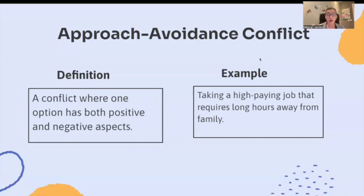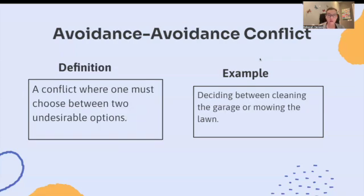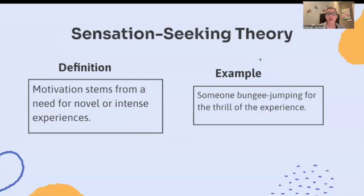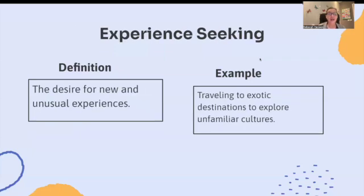Avoidance-avoidance conflict: a conflict where one must choose between two undesirable options. For example, deciding between cleaning the garage or mowing the lawn — both very undesirable. Sensation-seeking theory: motivation stems from a need for novel or intense experiences. Someone bungee jumping for the thrill of experience — I will never do that. Experience seeking: the desire for new and unusual experiences. For example, traveling to exotic destinations to explore unfamiliar cultures.